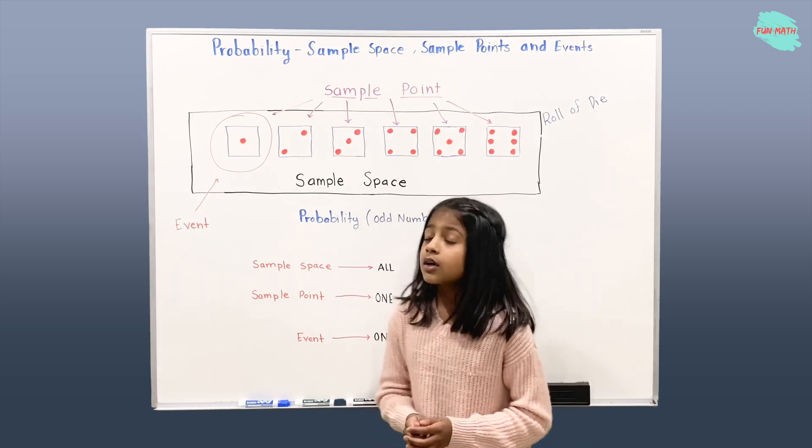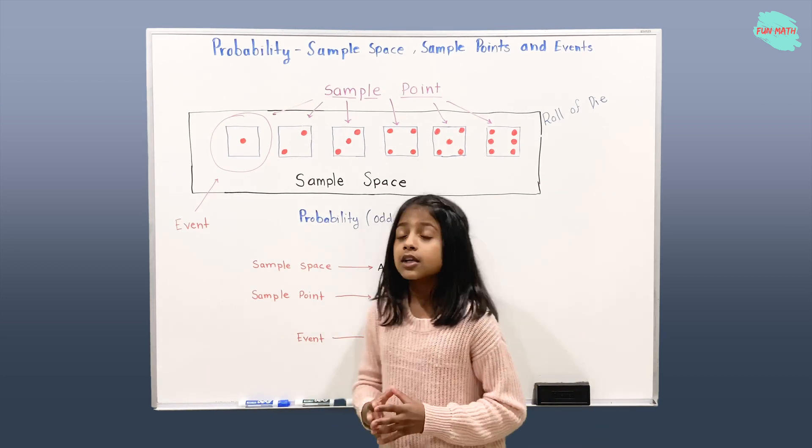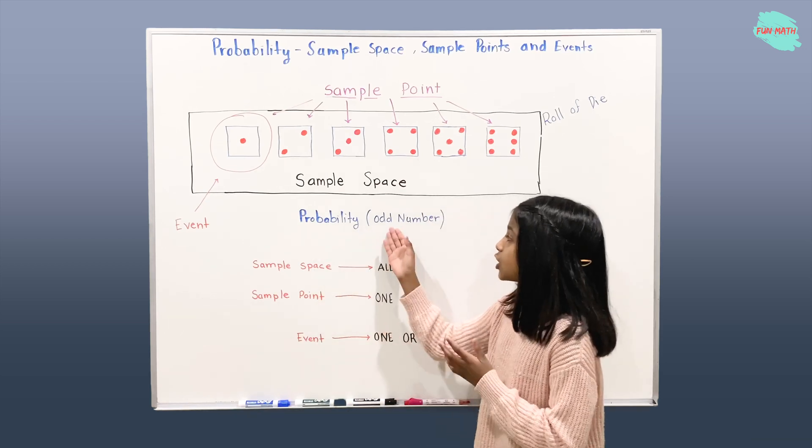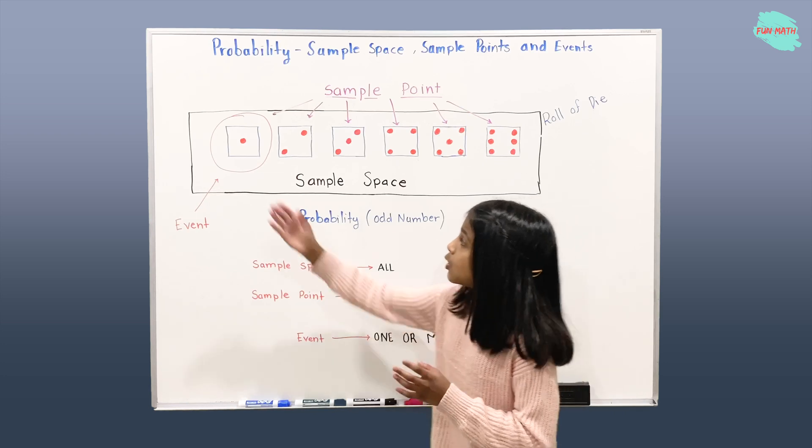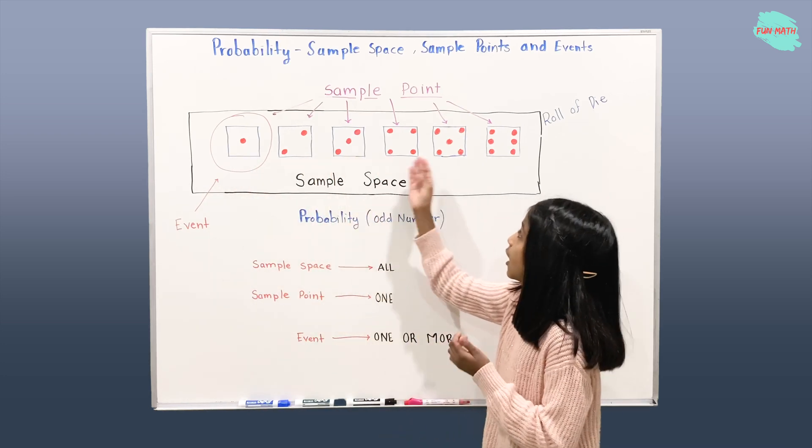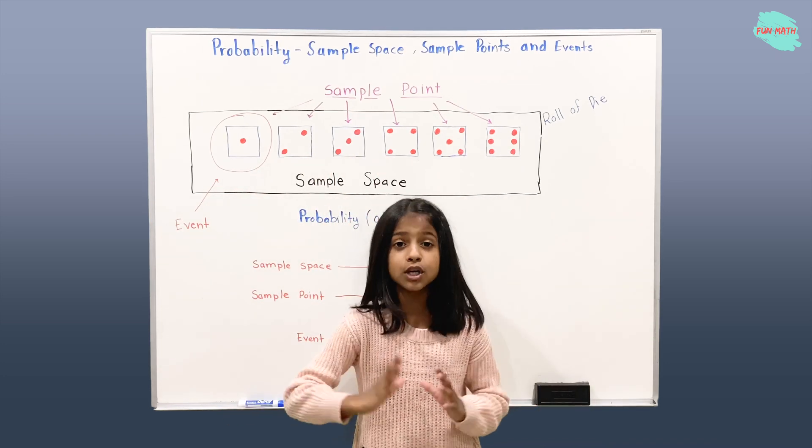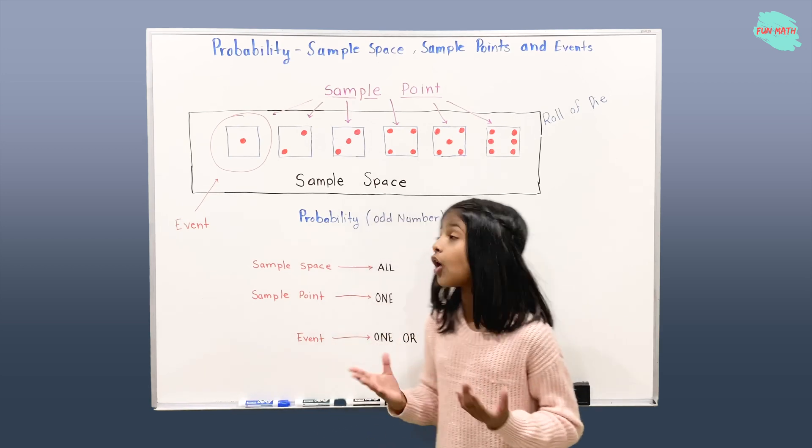So what is the event? So the probability of getting an odd number is, can be 1, 3, and 5. Aren't those all odd numbers? Yes, those are all odd numbers.